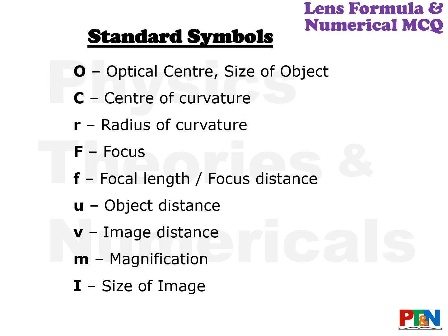This video is for Lens Formula and Numerical MCQs. We will be using the standard symbols from your book. Capital O is for both optical center and size of the object — depending on context. Capital C is for center of curvature. Small r is for radius of curvature. Capital F for focus. Small f for focal length. U, V, M are for object distance, image distance, and magnification respectively. Capital I is size of image.